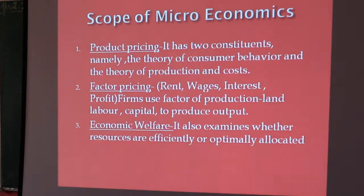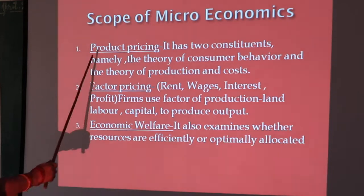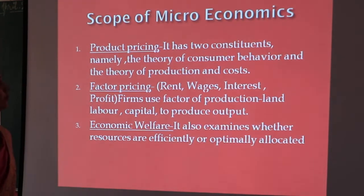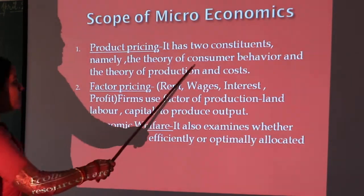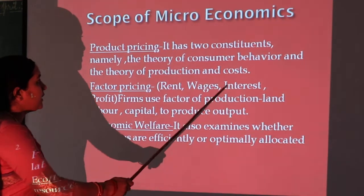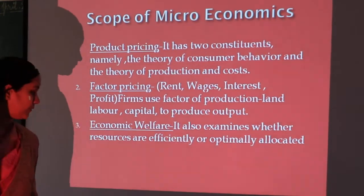The scope of microeconomics has mainly three areas. First is product pricing. Here we divide product pricing into two behaviors: first is consumer behavior, and second is production and cost behavior.